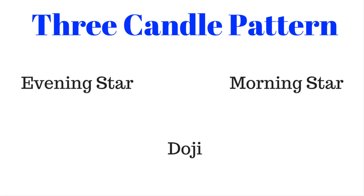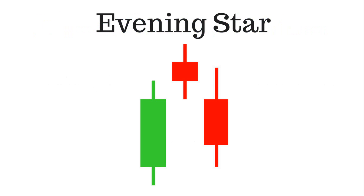Most commonly used three candle patterns are Evening Star and Morning Star. The Evening Star pattern is viewed as a bearish reversal pattern that usually occurs at the top of an uptrend. The pattern consists of three candlesticks. Formation of Evening Star: a large bullish candle followed by a small bearish or bullish candle, and the third candle should be a large bearish candle.